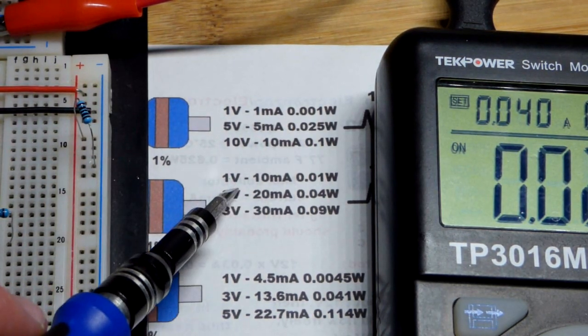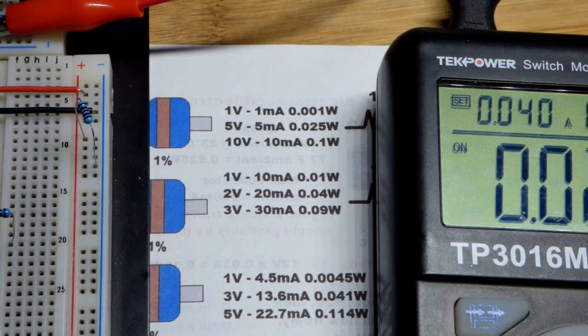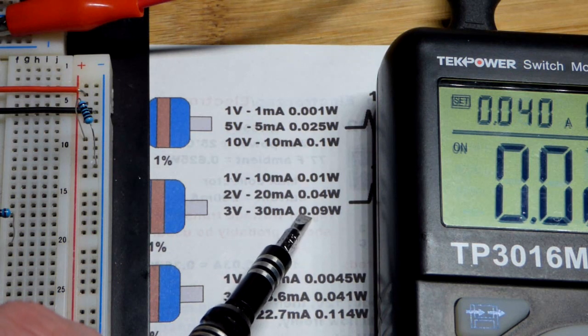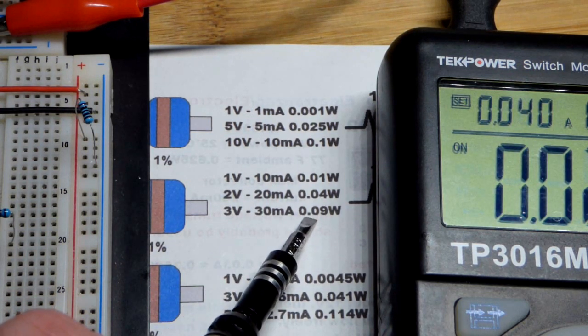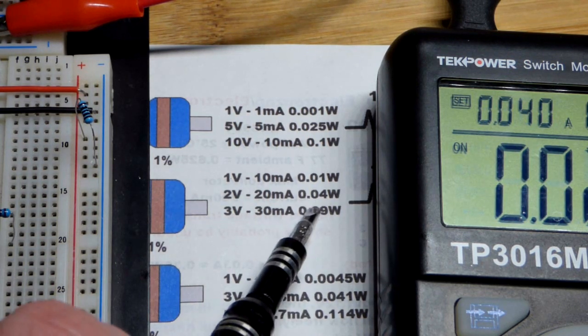1 volt, 10 milliamps, 2 volts, 20 milliamps, 3 volts, 30 milliamps. Really straightforward. The problem is, we got to 3 volts. We're already really close to the most wattage we want to use for long periods of time. The 0.125.